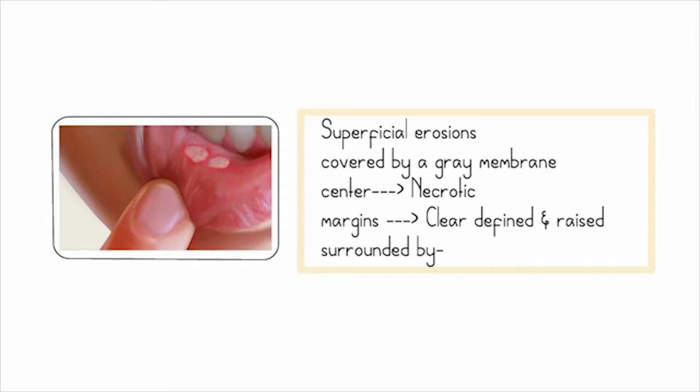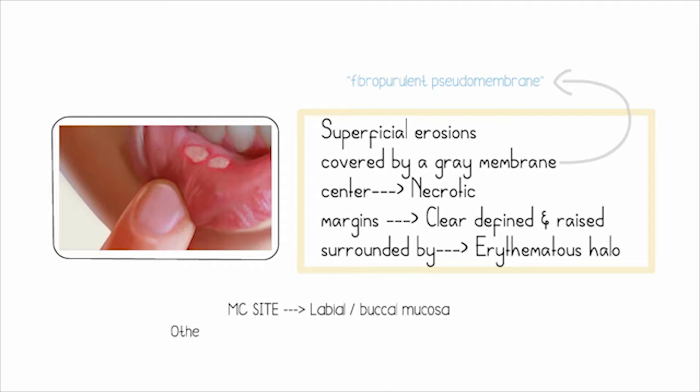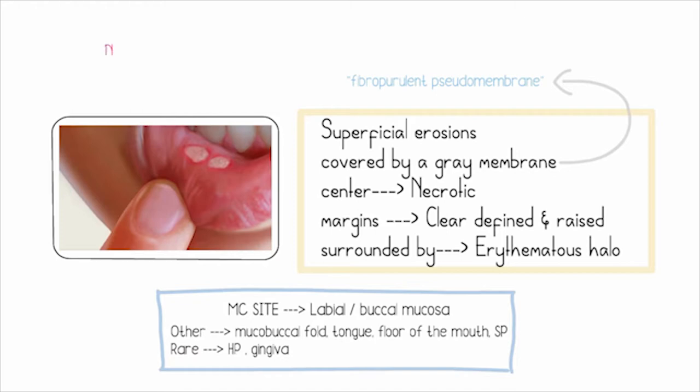The ulcers are surrounded by an erythematous halo. The gray membrane is also referred to as fibropurulent pseudomembrane. The most common sites for aphthous ulcers are the labial or buccal mucosa. Other sites include the mucobuccal fold, tongue, floor of the mouth, and soft palate. They are rarely seen on the hard palate and gingiva. These aphthous ulcers are non-contagious, non-sexually transmissible, and idiopathic — meaning it is not clear why some people get them.